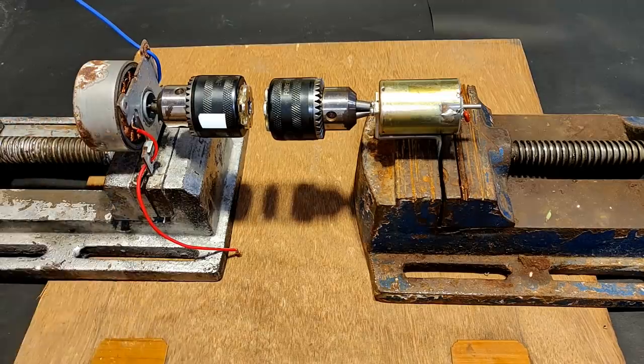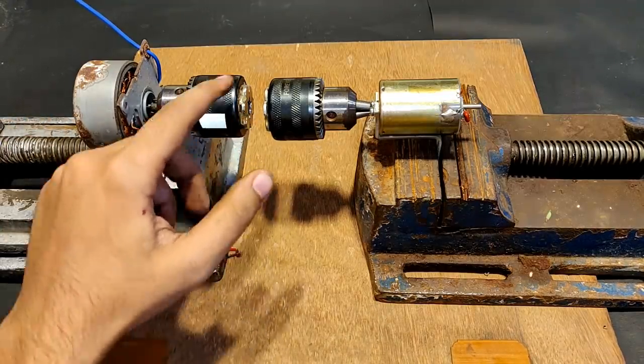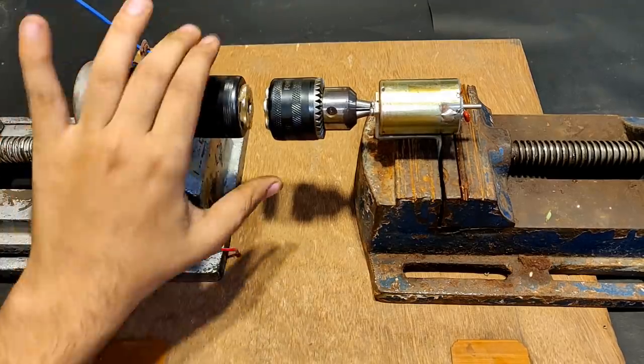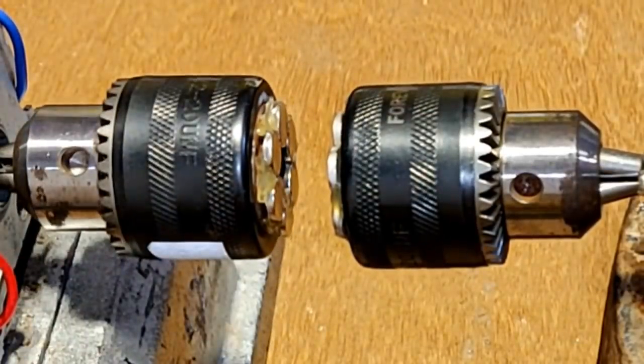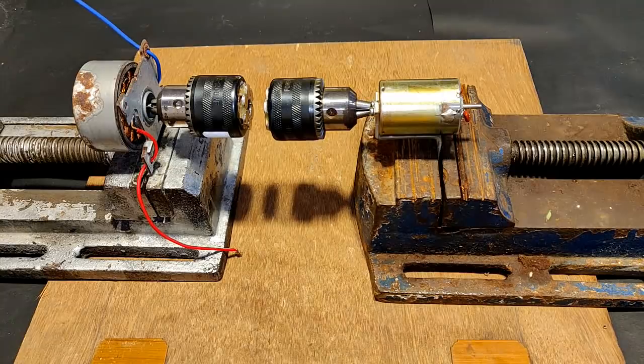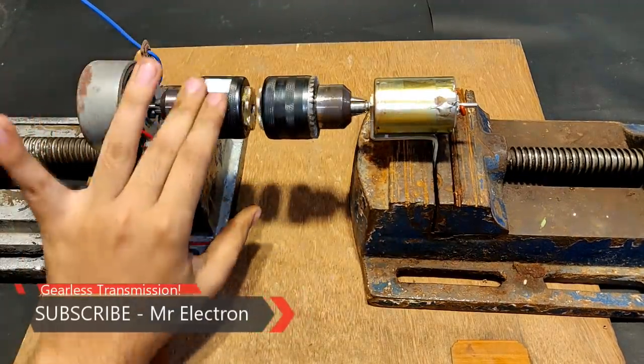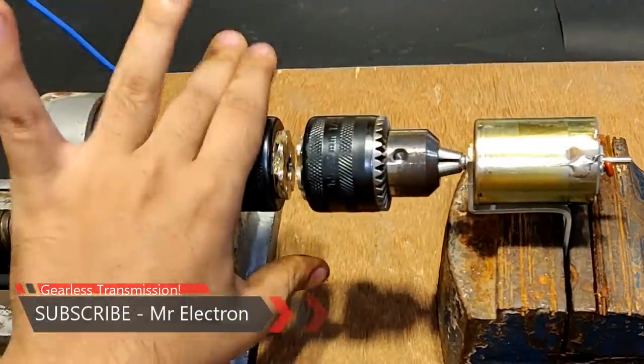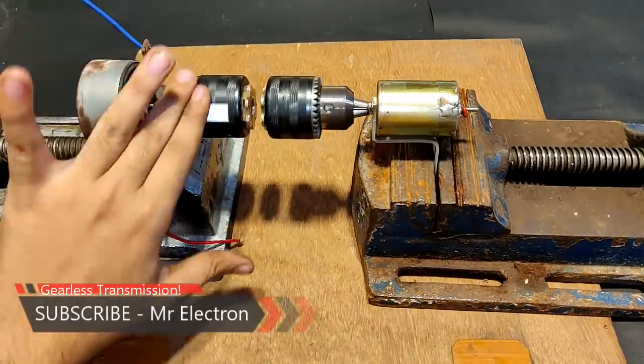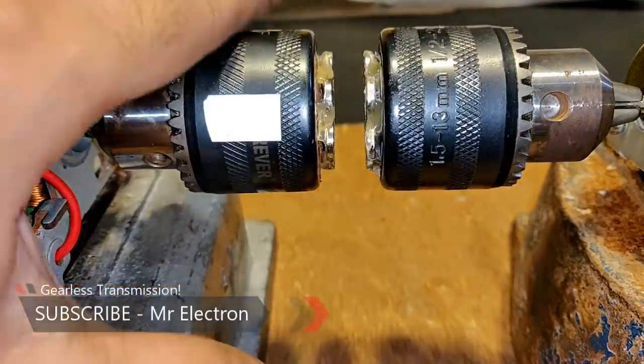You saw it automatically aligned according to the poles. At present it is vibrating because the distance between the magnets is a little bit higher. You can see that now it is working. You can see how perfectly aligned it is.